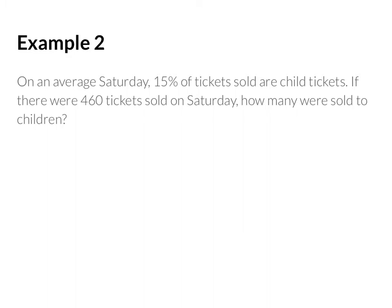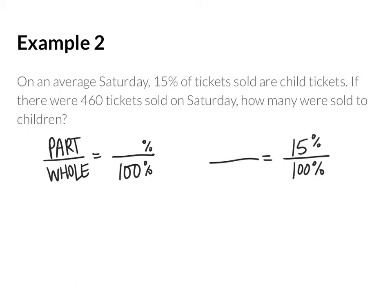For example 2, on an average Saturday, 15% of tickets sold are child's tickets. If there were 460 tickets sold on Saturday, how many were sold to children? We start by finding our part-to-whole relationship, then finding what that is out of 100%. In this problem, they don't give us the part and the whole — they give us the percent. So the easiest number to fill in is the 15, since it's 15% of the tickets, meaning 15 out of 100 tickets. Then there were 460 tickets sold on Saturday, and since 15 represents the child's tickets and that's what we're looking for, we leave the top blank and fill in 460 as the total tickets sold.